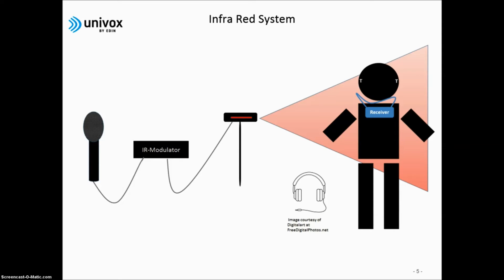The listener must use a receiver. In a public venue, the listener needs to borrow the receiver and the owner needs to maintain and dispense these units. The IR system is sensitive to direct sunlight and the receiver must be in line of sight of the IR radiator.